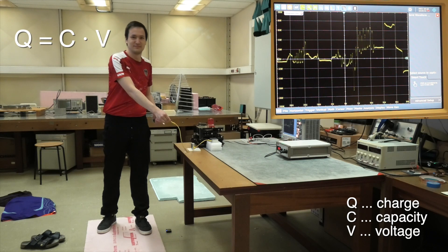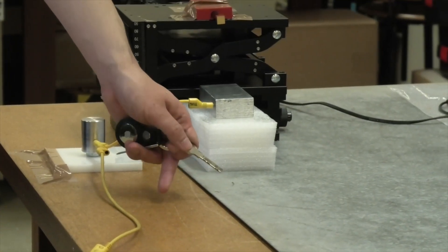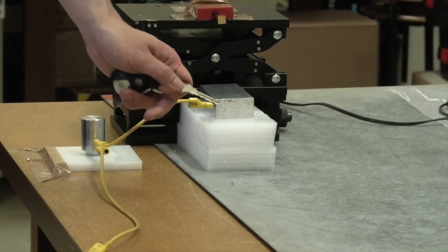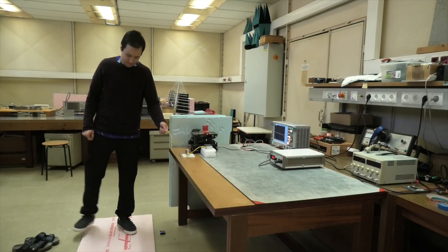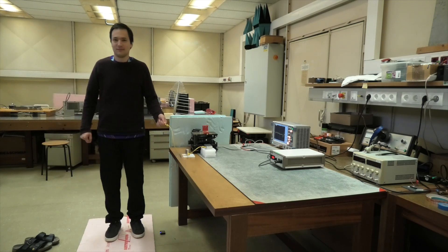By the way, in case you experience such discharges as too uncomfortable, you only need to grab your key. A discharge via a metal key is almost unnoticeable. But I could just step on the lab floor as well to discharge myself harmlessly, since there is a grounded copper surface directly under this floor.